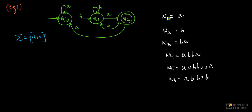Let's look at some examples. If I start and use input 'a', that is not accepted because I have not reached the final state. If my second word is 'b', I start here and with b I transition to q1, which is not a final state since q2 is the final state. So this is also not accepted.